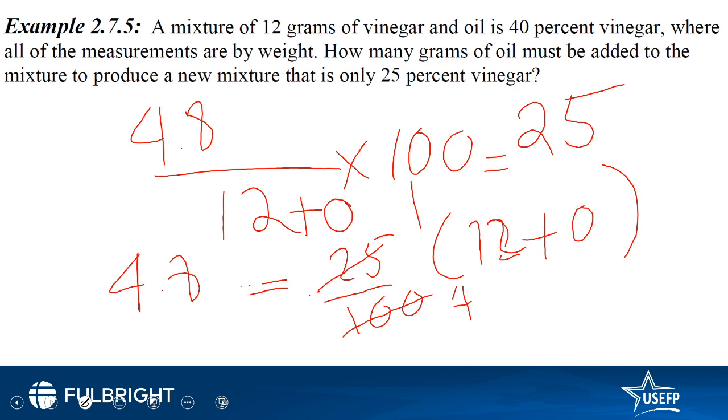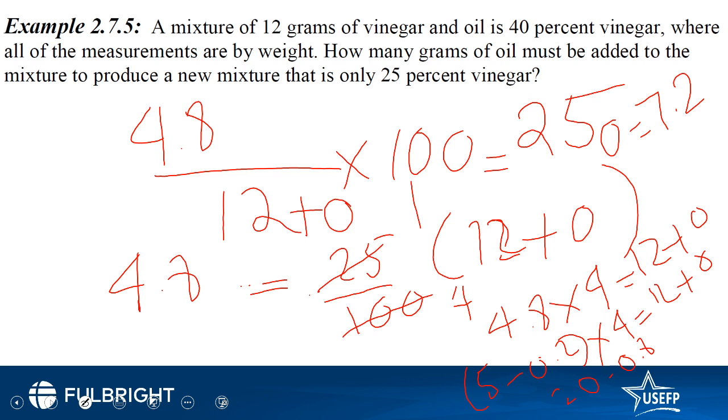So 4.8 multiplied by 4, a faster way of multiplying this is by partitioning the 4.8, so 5 minus 0.2 into 4 equals 12 plus O. This becomes 20 minus 0.8 which becomes 19.2. So 19.2 minus 12 comes out to be 7.2. So O equals 7.2 grams of oil that needs to be added to reduce the percentage of vinegar to 25%.